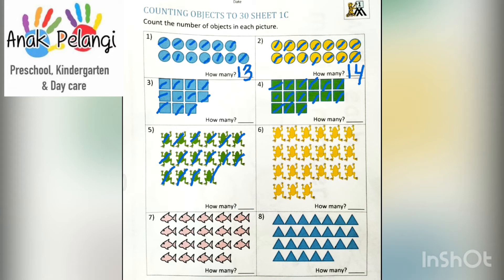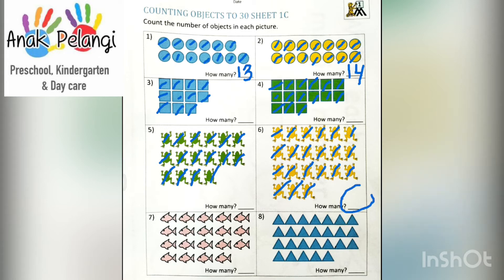Next, let's count the yellow frogs. 20, 21. How many? 21. Write 21 here.